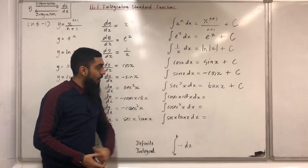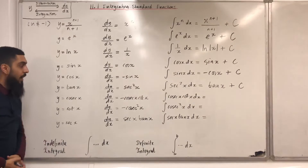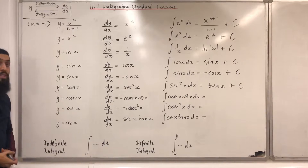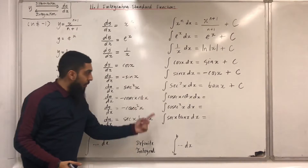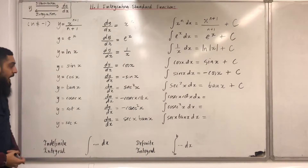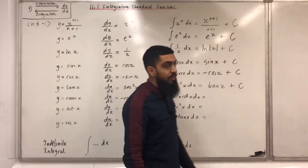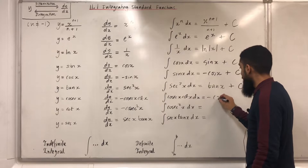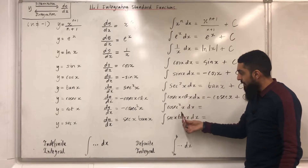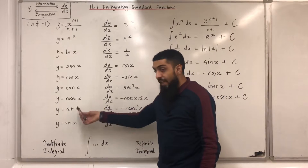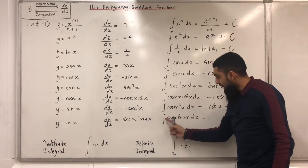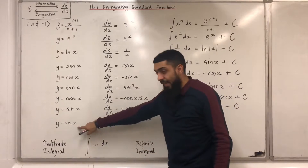Moving on: the integral of cosec x cot x with respect to x. dy/dx equal to minus cosec x cot x gives us y equal to cosec x. Therefore the integral of cosec x cot x with respect to x will be minus cosec x plus c. The integral of cosec²x with respect to x will be minus cot x plus c. The integral of sec x tan x with respect to x will be sec x plus c.